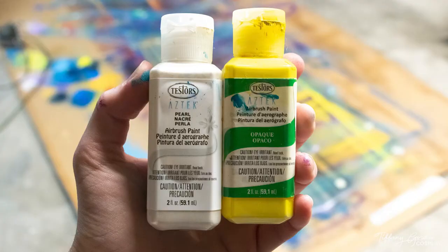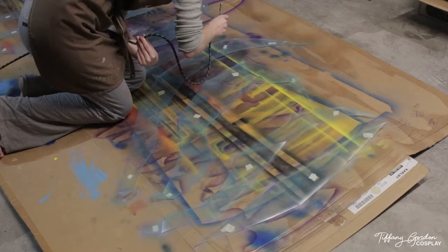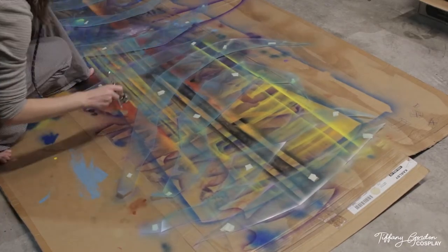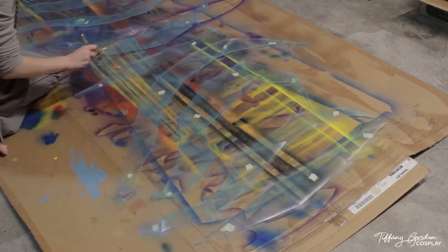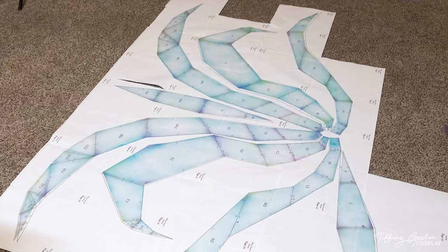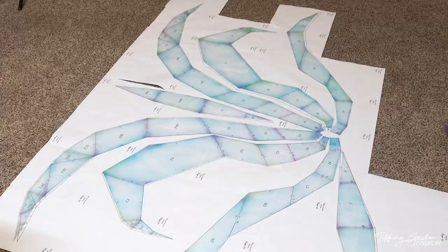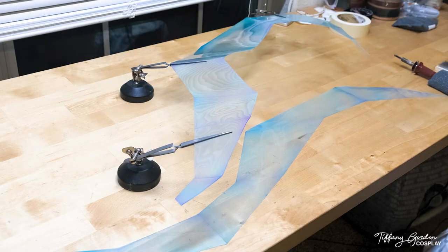For our last paint color, I did a mix of the pearl white and yellow color, again applying only a little bit here and there on all of the edges and bends. And here's all of the pieces once they are done being painted.